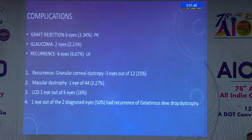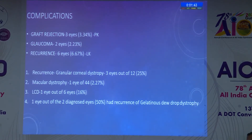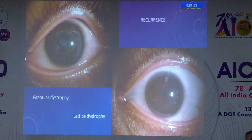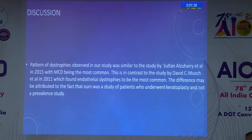The complications noted in our study were graft rejection in three eyes, glaucoma in two eyes, and recurrence in six eyes. All six cases of recurrence were following lamellar keratoplasty. The highest rate of recurrence was in gelatinous dewdrop dystrophy, followed by granular and then lattice corneal dystrophy. These pictures show the recurrences: granular dystrophy and lattice dystrophy, both following DALK.